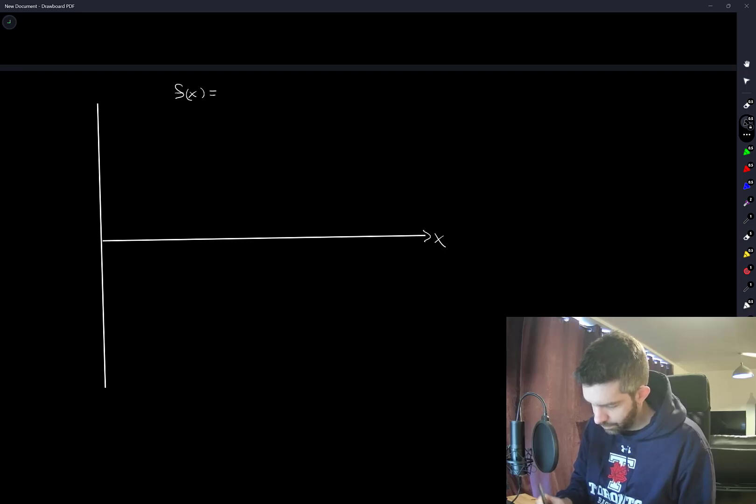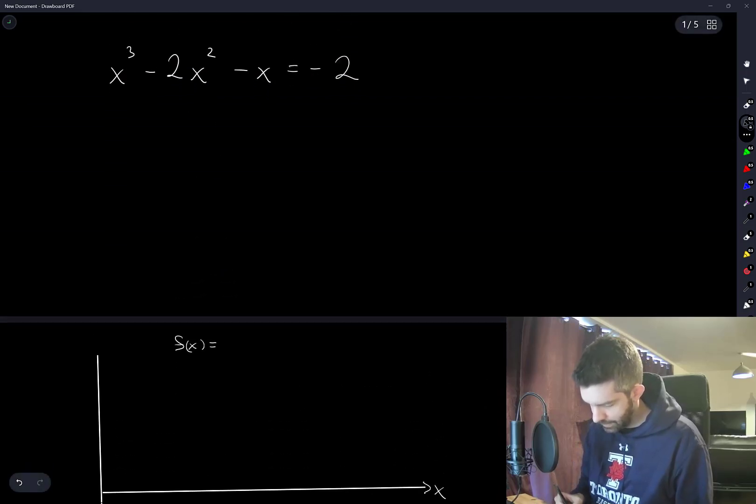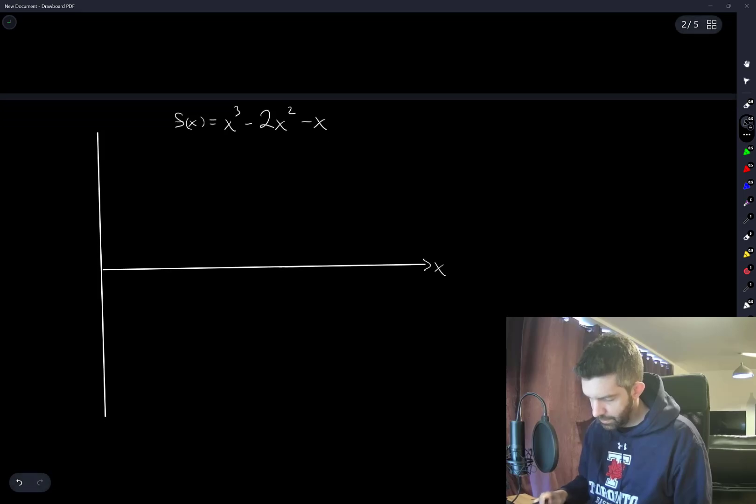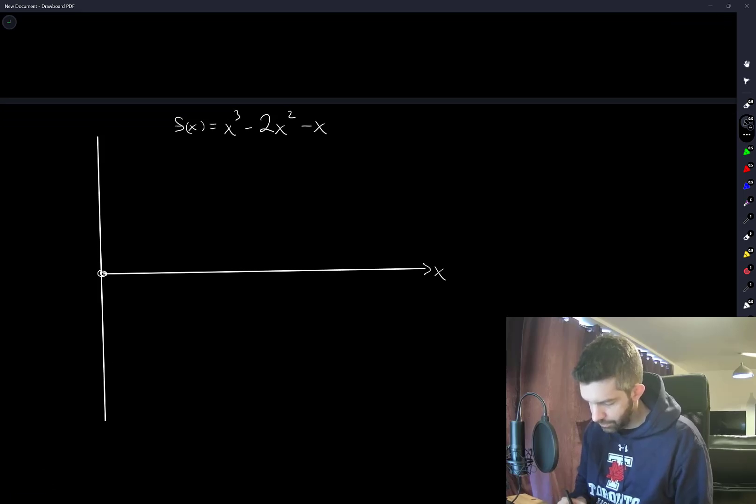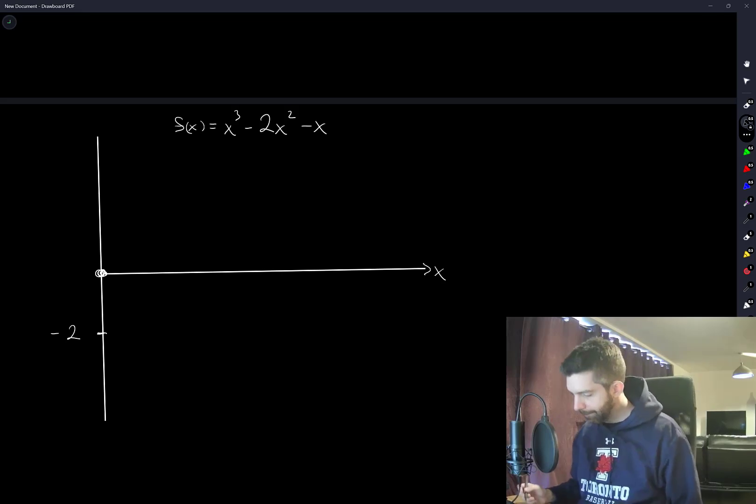So f(x) is equal to x³ minus 2x² minus x. We notice that f(0) is equal to 0.